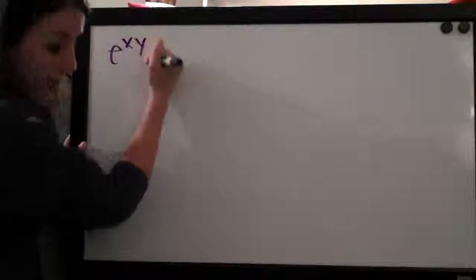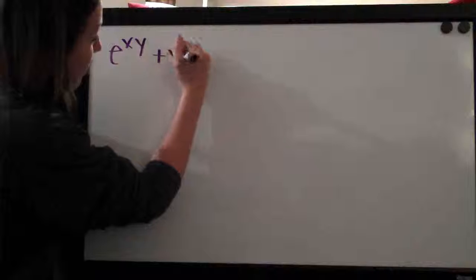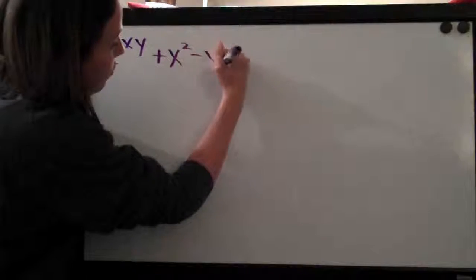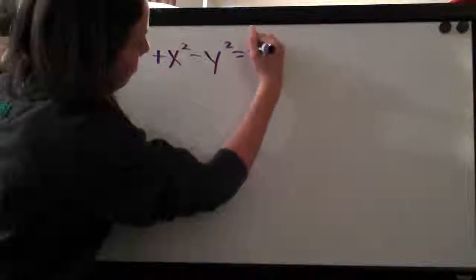We're going to be doing another linear approximation problem today. This one is asking us to find the equation of the tangent line, submitted by one of our viewers. The equation given is e to the xy plus x squared minus y squared equals 5.